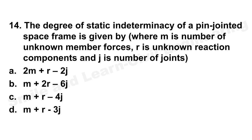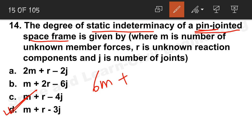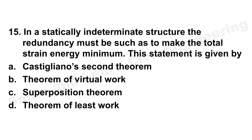Question 14: The degree of statical indeterminacy for a pin-jointed space frame is given by which formula, where M is the number of members, J is the total number of joints including supports, and R is the number of unknown reactions? The correct answer is option D: M + R − 3J. Remember: for a rigid-jointed space frame, it would be 6M + R − 6J.